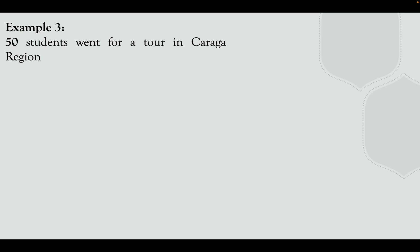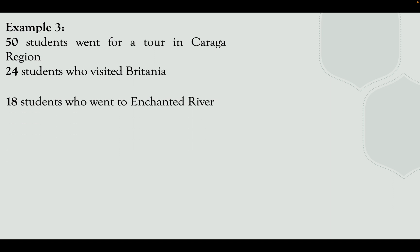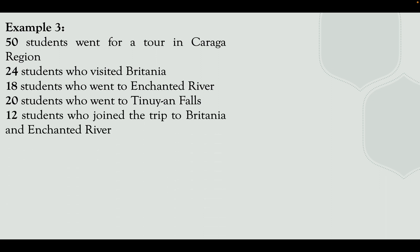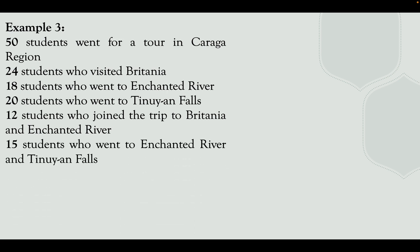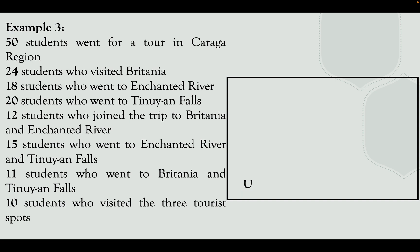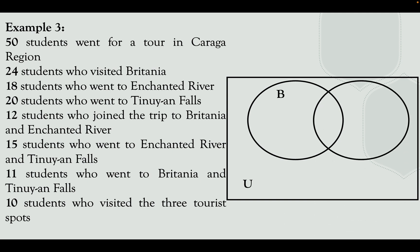Let's go to example number three. 50 students went on a tour in Caraga region. 24 students visited Britannia, 18 students visited Enchanted River, 20 students went to Tinuy-an Falls, 12 students joined the trip to both Britannia and Enchanted River, 15 students went to both Enchanted River and Tinuy-an Falls, 11 students went to both Britannia and Tinuy-an Falls, and 10 students visited all three tourist spots. First, draw a square for the universal set, then make three intersecting circles for Britannia, Enchanted River, and Tinuy-an Falls.